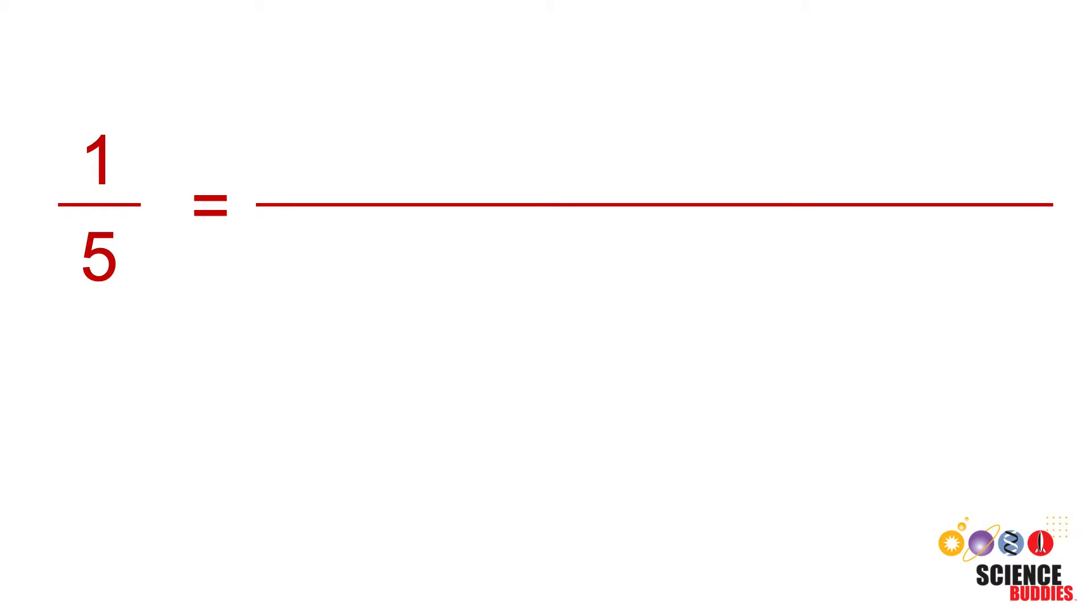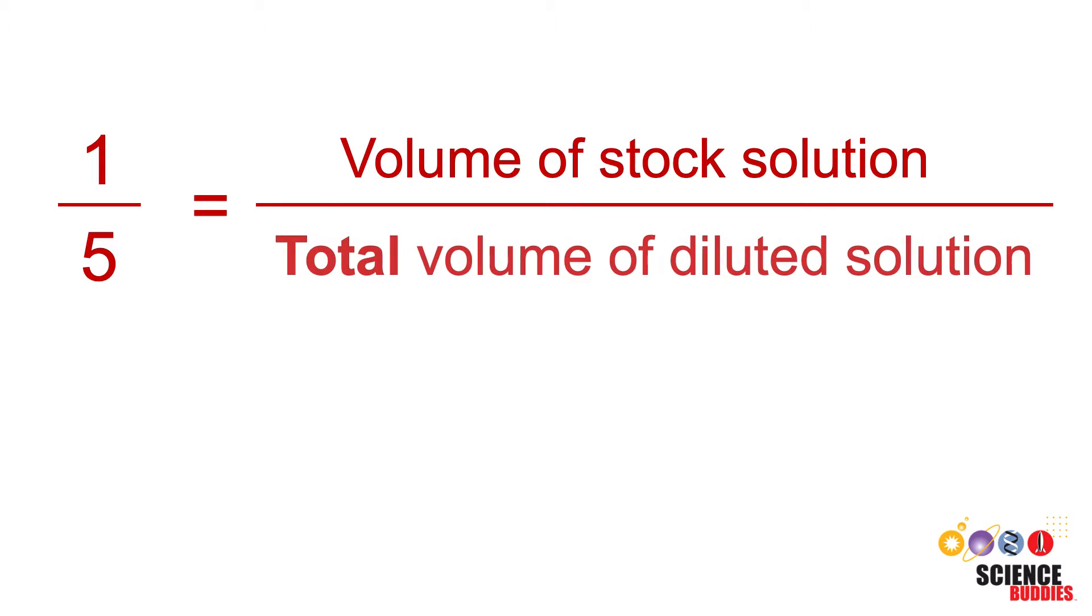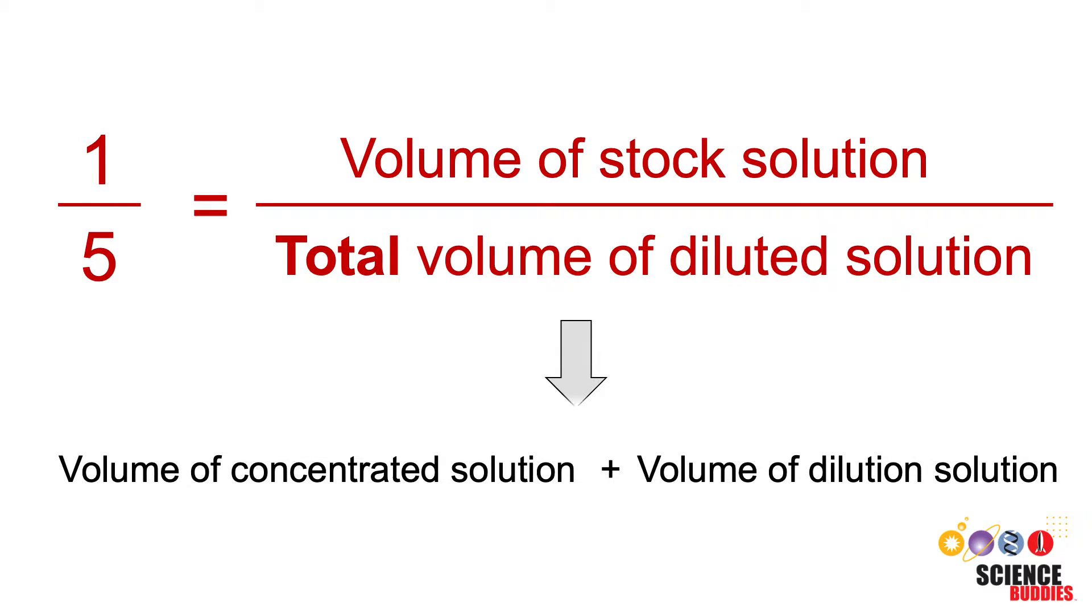In a 1 to 5 dilution, 1 refers to the volume of the sample or stock solution you plan to dilute. And 5 refers to the total volume of the diluted solution, which includes the volume of the sample and the volume of the solution used for the dilution.